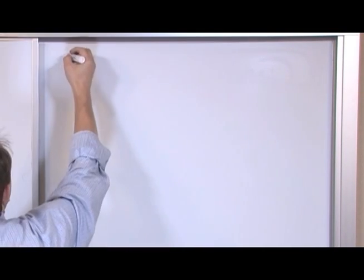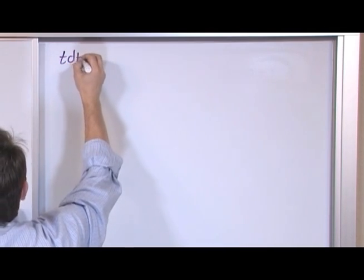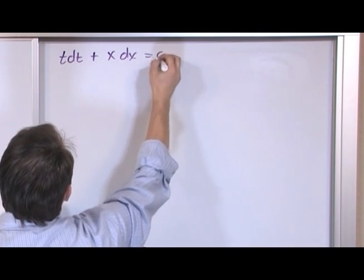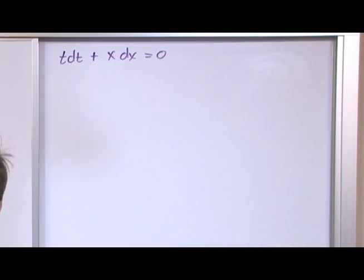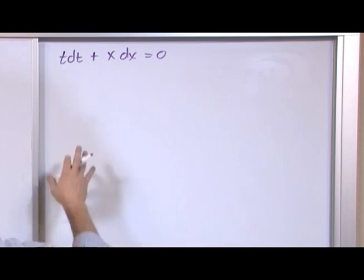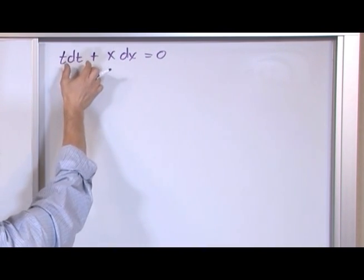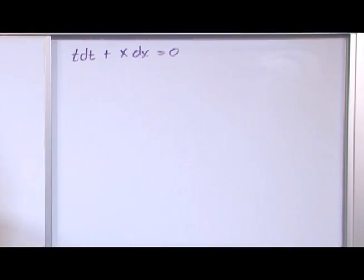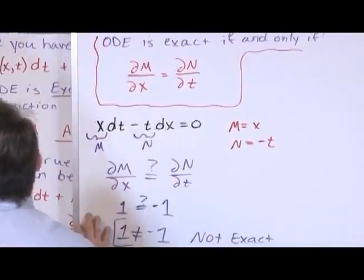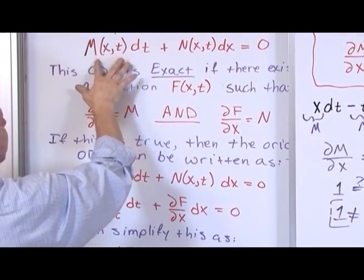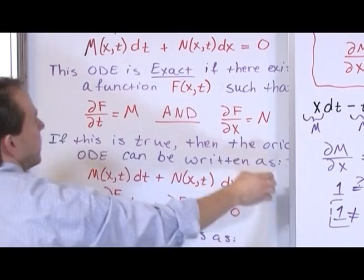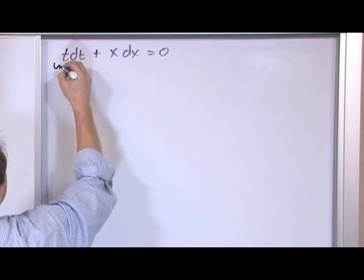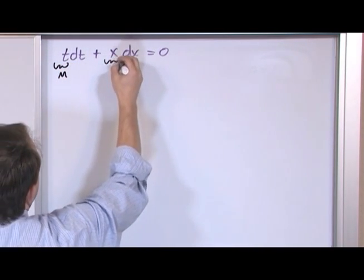So the next problem is t times dt plus x times dx is equal to 0. Now first notice, it is in the form of our equation that we care about. Some function in front of dt plus some function in front of dx. And if you remember back, the guy that's in front of dt is m. So this is m and this is n.